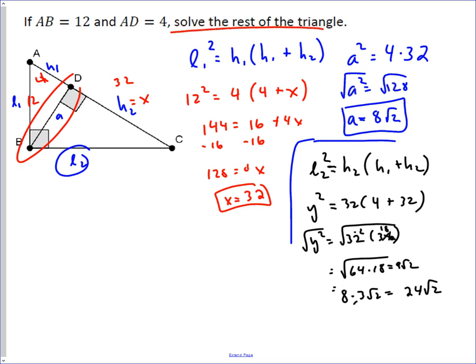And so in this case, BC is 24√2. You could, like I said, calculate that with the Pythagorean theorem, but I wanted to show you how to use these formulas.